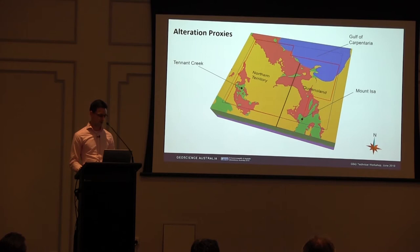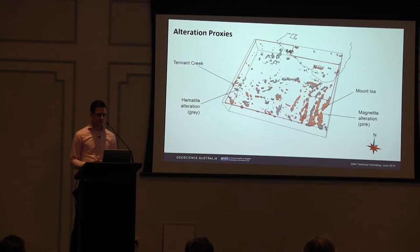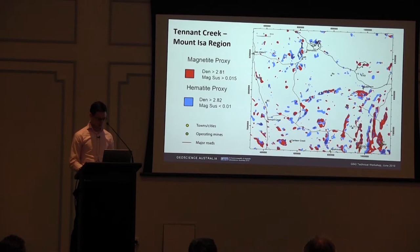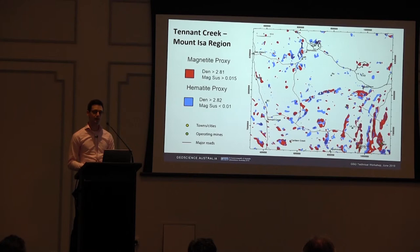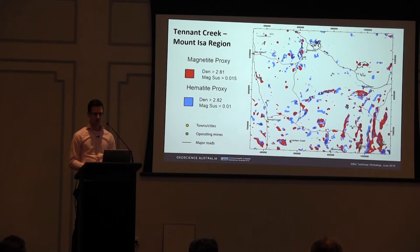Here is our 3D model volume — shown in grey is the hematite alteration proxy and shown in pink is the magnetite alteration proxy. Given the scale of this model, it's a bit easier to show these in map view from the top down. In 2D map view, we've got our magnetite proxies in red and our hematite proxies in blue. There are a lot of interesting trends: some follow the Mount Isa belts, a few inliers, and some more discrete anomalies where red and blue lie next to each other.